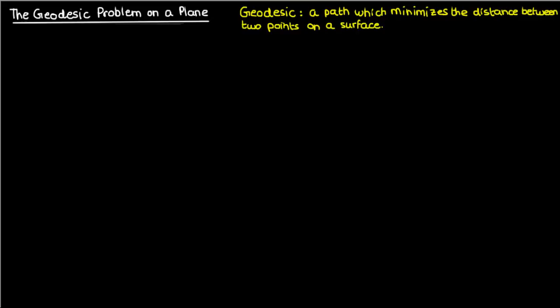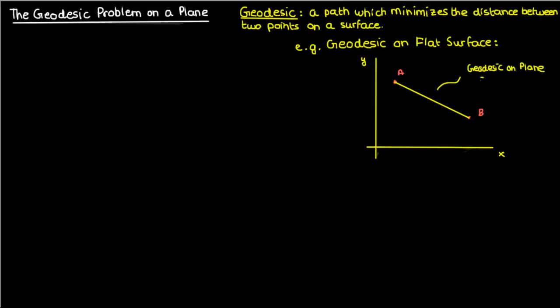For example, a geodesic on a flat surface or a plane is the path which minimizes the distance between two points on the plane. And obviously this is just a straight line connecting those two points.